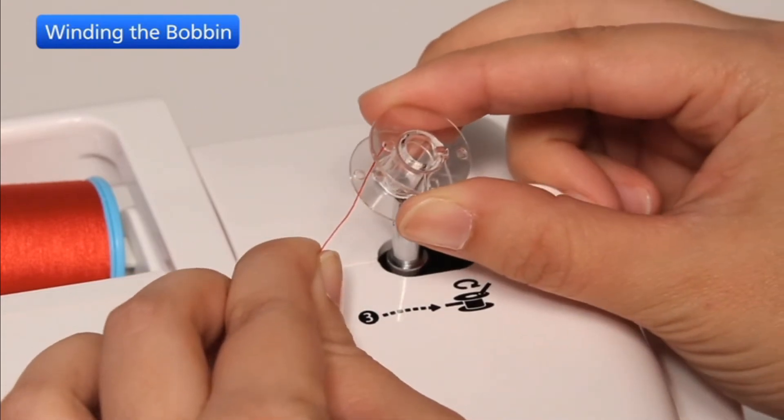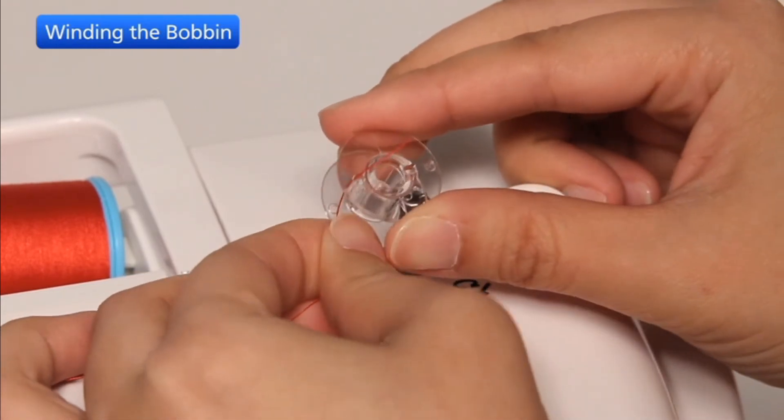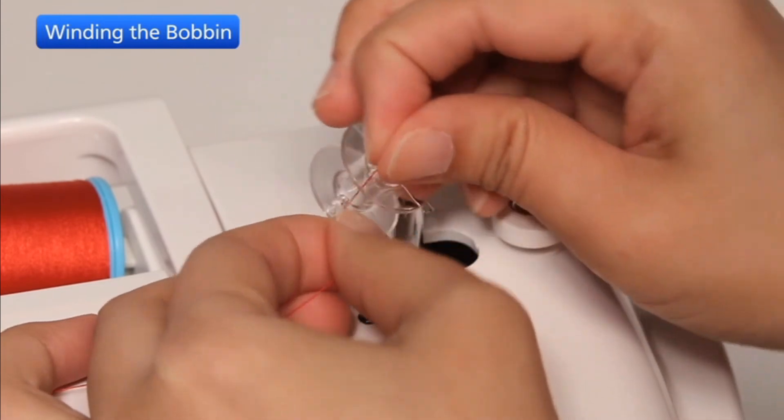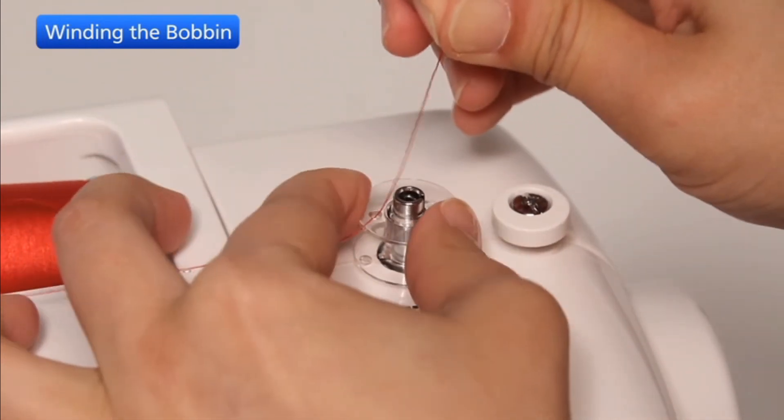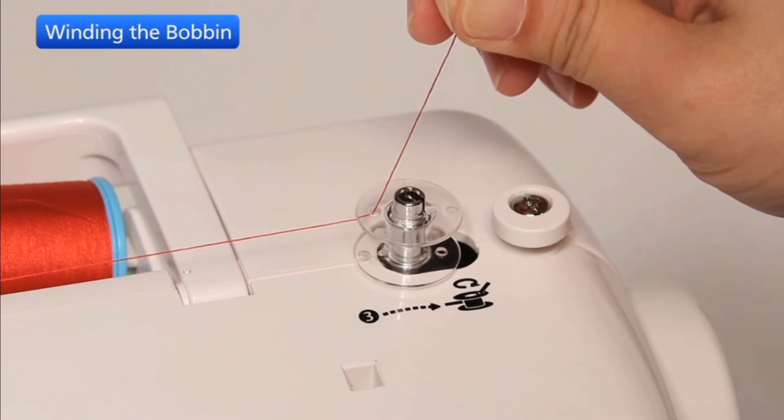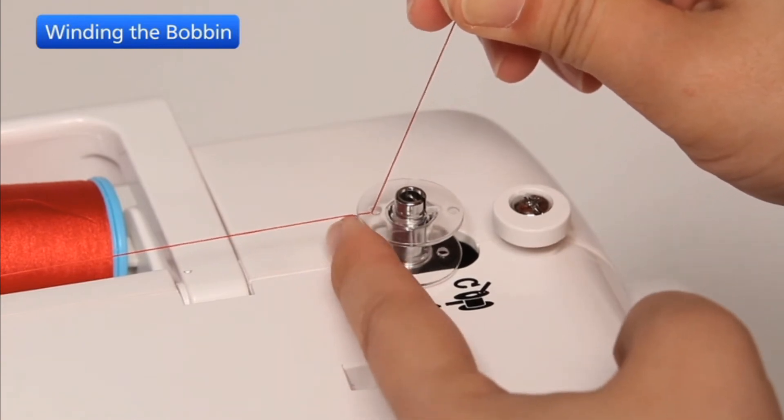Thread through the hole in the bobbin from the inside to the outside. Put the bobbin on the bobbin winder spindle. Push the bobbin to the right.